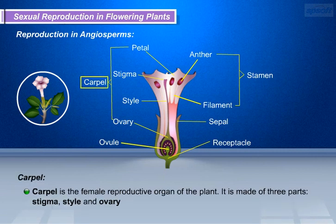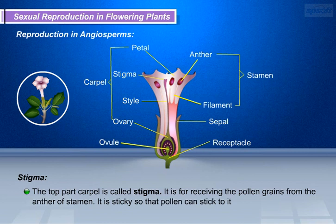Carpel is the female reproductive organ of the plant. It is made up of three parts: stigma, style, and ovary. The top part of the carpel is called stigma. It is for receiving the pollen grains from the anther of the stamen. It is sticky, so that pollen can stick to it.